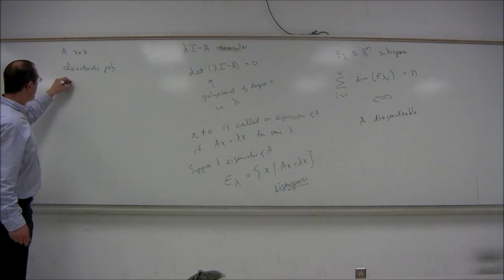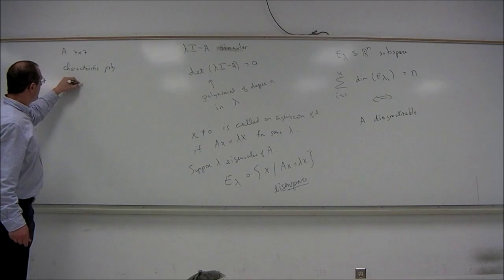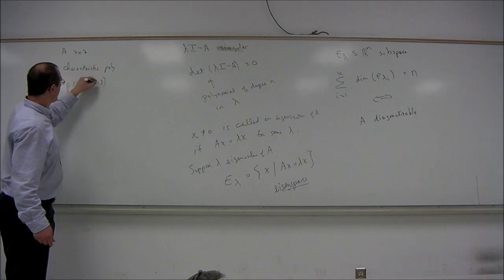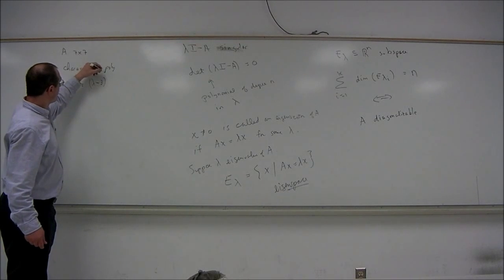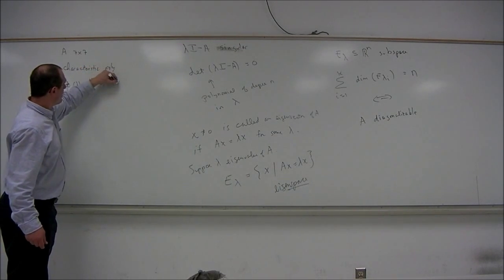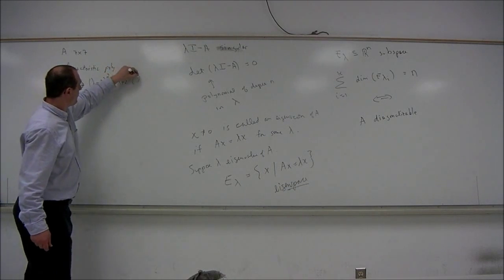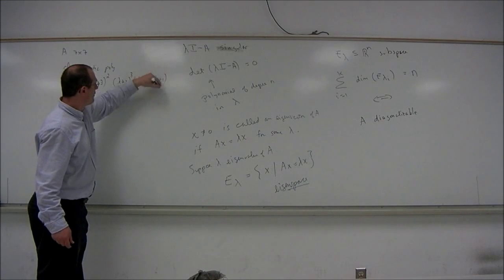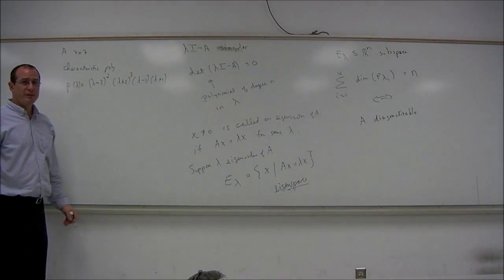Let's suppose that the characteristic polynomial is the following. We'll call it P of lambda. Suppose it's equal to lambda minus 3 squared times lambda plus 2 cubed times lambda minus 1 times lambda plus 1. Notice that's a polynomial of degree 7.